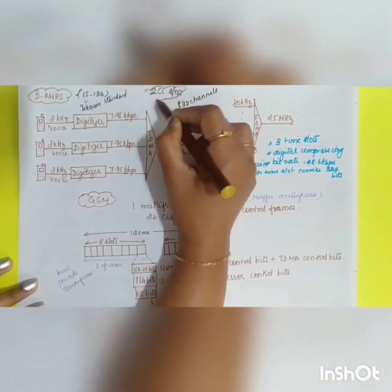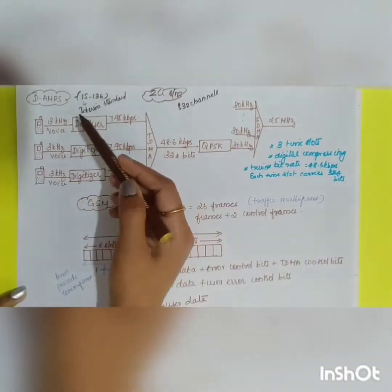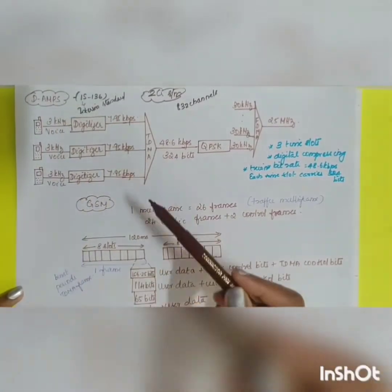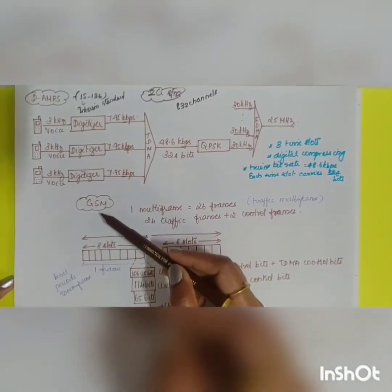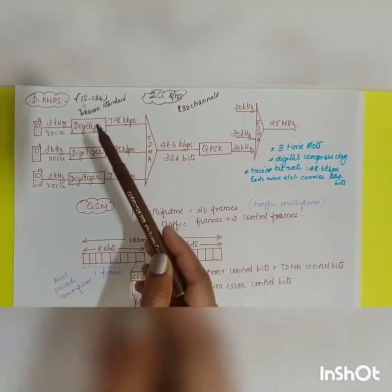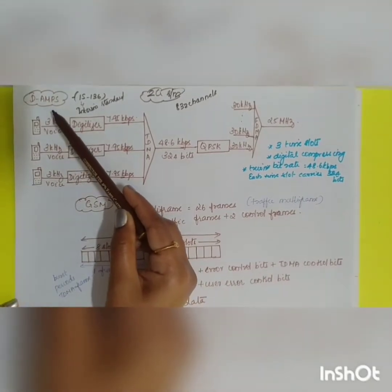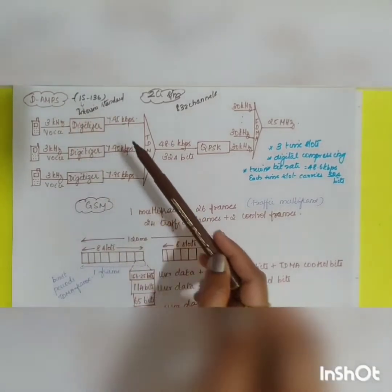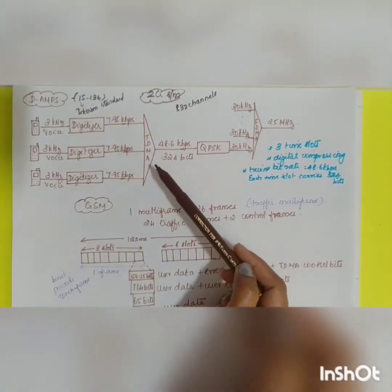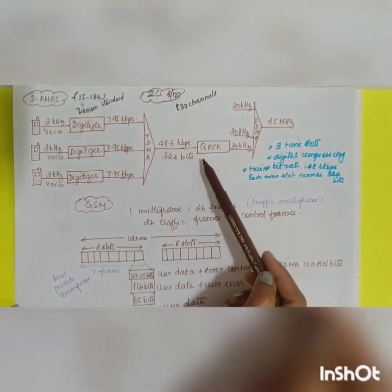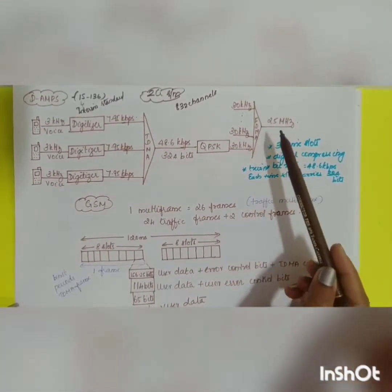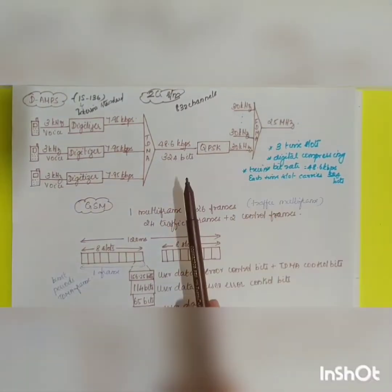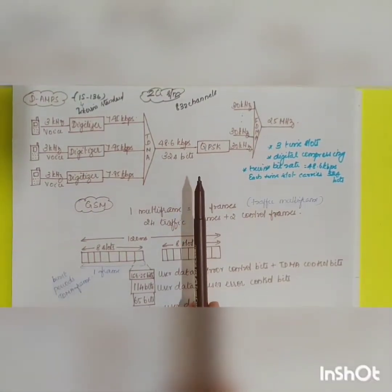The two important examples of 2G are D-AMPS, which stands for Digital AMPS, and the GSM system. D-AMPS is the digital version of the analog AMPS system and is backward compatible with it, meaning it can be used alongside the AMPS system and uses the same channels.